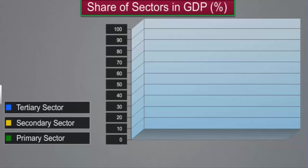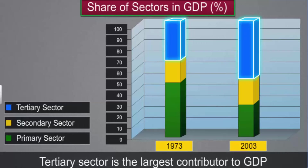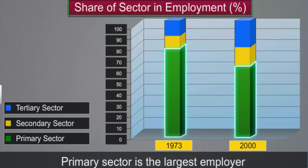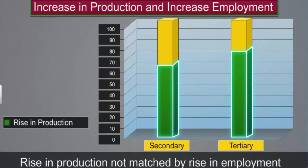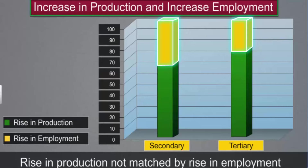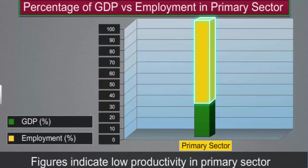In the three decades from 1973 to 2003, the tertiary sector expanded the most and became the largest contributor to India's GDP. However, the primary sector remains the largest employer, with more than 50% of the working population engaged in it. The increase in production in manufacturing and services is not matched by an increase in employment in these sectors. The primary sector employs over 50% of the working population but has a share of only 25% in GDP, indicating low productivity.